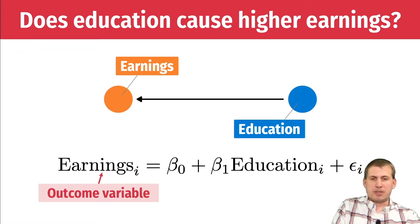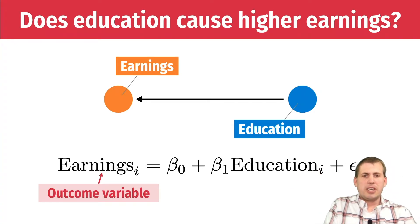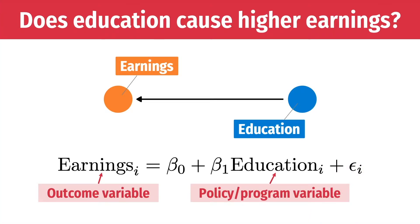This lines up with what we've been learning throughout the semester — earnings is your outcome variable or dependent variable. Education, on the other hand, is what we call a policy variable or program variable. It's the thing you care about, the thing you can manipulate, or in the case of education, the thing you can pass policy around — helping people gain more education so they can earn more later in life.